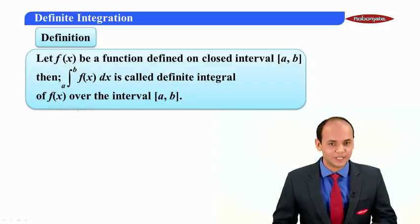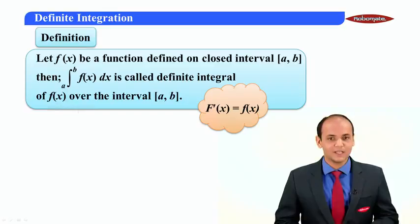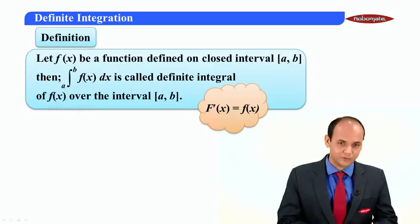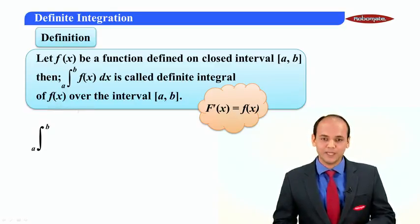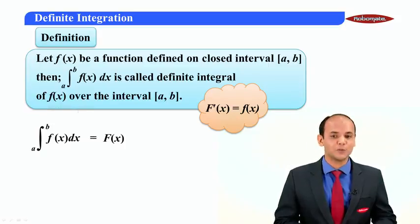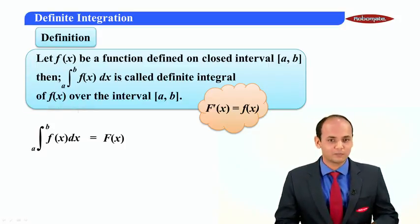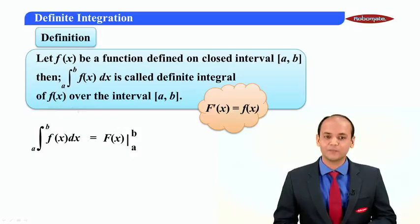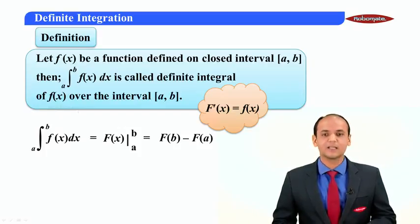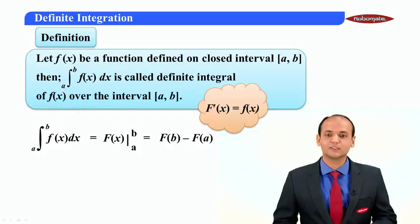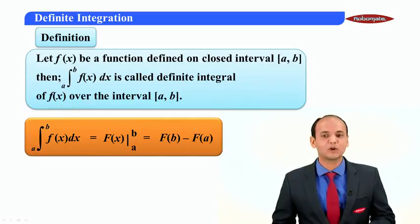You have studied in indefinite integration that if the differentiation of capital F is small f, then we use capital F as the anti-derivative. Using this, here is a very important formula: integral a to b of f(x) dx equals capital F with limits a to b, which equals F of the upper limit, that is F(b), minus F of the lower limit, that is F(a). Remember this. Here, a is called the lower limit and b is called the upper limit.